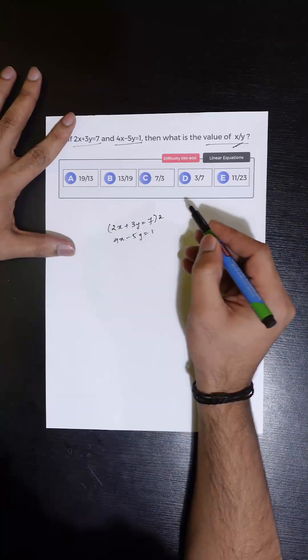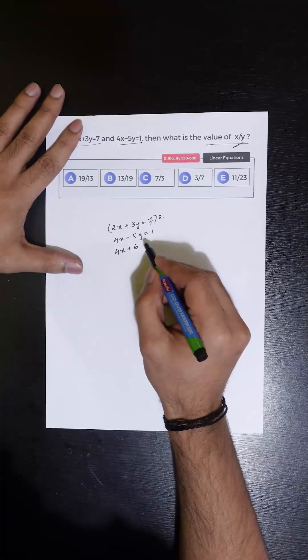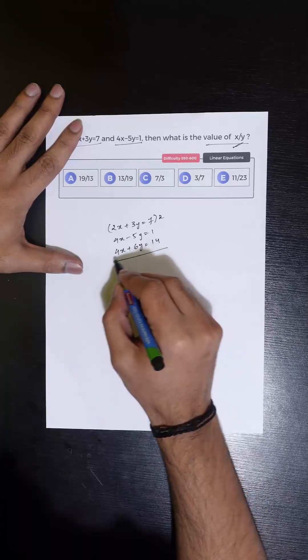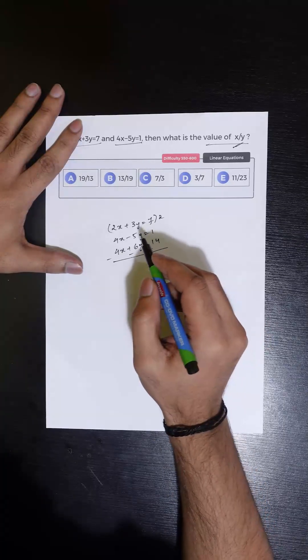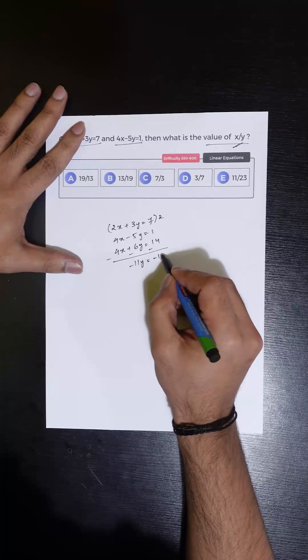Let us first multiply the first equation by 2. Upon multiplication, we get 4x plus 6y is equal to 14. And upon subtracting these two equations, we get minus 11y is equal to minus 13.